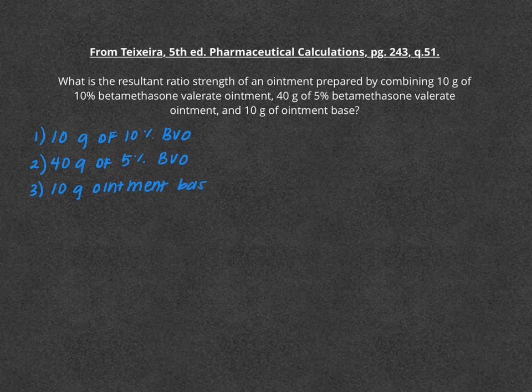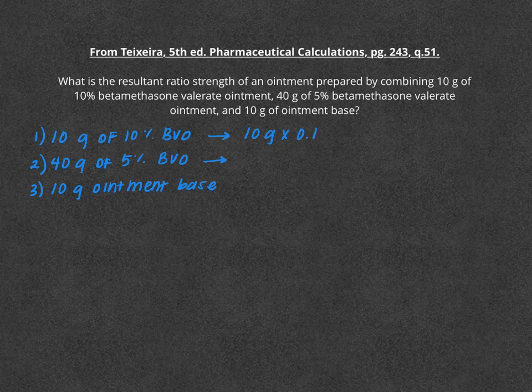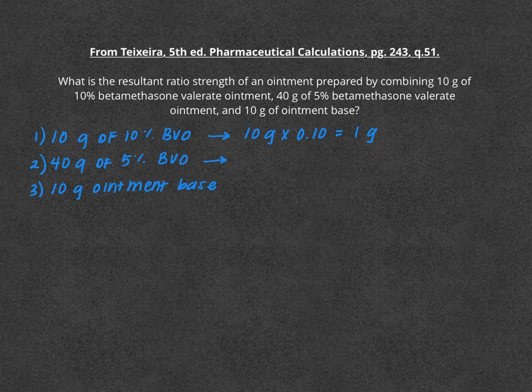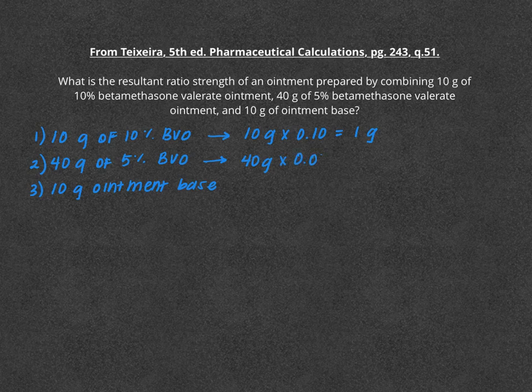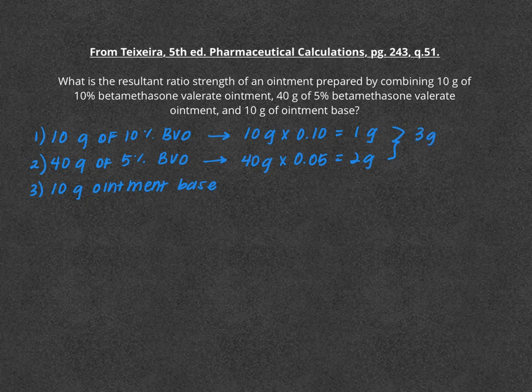Now the first thing we need to do is figure out how much of the betamethasone valerate ointment we have. We're going to turn these into volumes. Knowing that we have 10 grams of this 10% concentration, we can figure out that we need 1 gram. We have 40 grams of the 5% concentration, so we'll need 2 grams of that particular one. Overall, if we add these together, we know that we need 3 grams total of these two different concentrations of betamethasone valerate ointment.